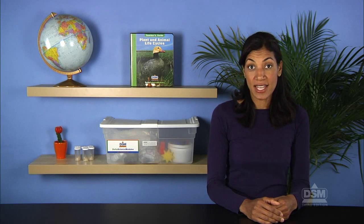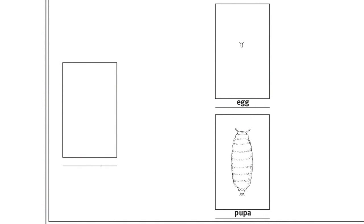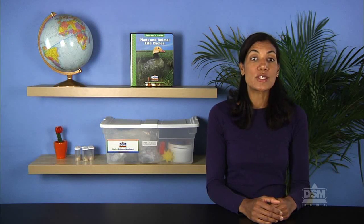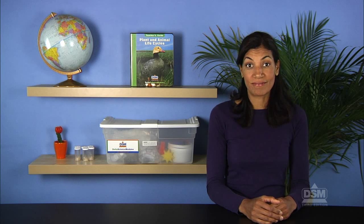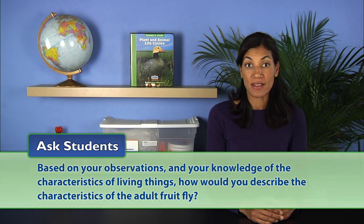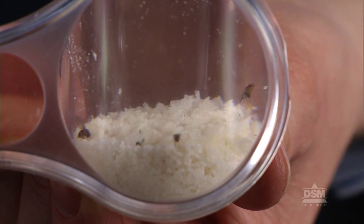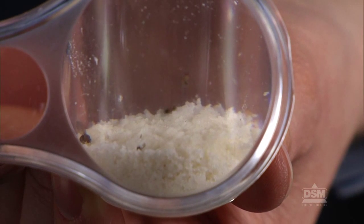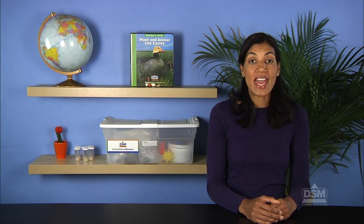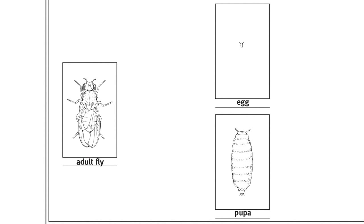Inform students that in the next life cycle stage the pupa turns into an adult fly and write the words adult fly on the line below box four on the chart. Ask students where the adult fruit fly comes from. Students should know that the fruit fly develops within the pupa, which grows darker in color as the fly develops, and when fully developed, the fruit fly emerges from the pupa. Students should describe the adult fruit fly as having six legs, two wings, and two eyes. The fruit fly can walk, fly, eat, take in water, and reproduce. Encourage students to identify adult fruit flies in their vials, then ask a volunteer to tape the picture of the adult fruit fly in box four on the chart.